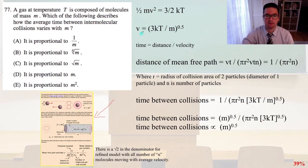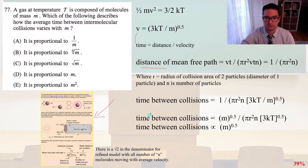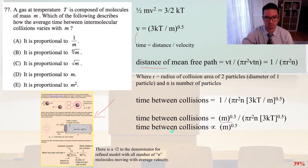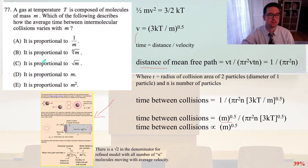That comes from distance divided by velocity as shown above. The time between collisions therefore equals the square root of m divided by the quantity pi r² n times the square root of 3kT. You can see that the time between collisions is proportional to the square root of m. So that is answer C.